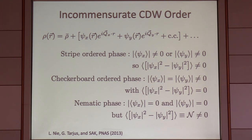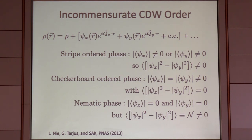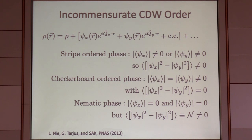I could imagine a nematic phase — translationally invariant, meaning both psi-x and psi-y have zero expectation value, but |psi_x|^2 minus |psi_y|^2 is non-zero. It means that fluctuations of the charge density wave order in the x direction are stronger than in the y direction. This is an example of what's called a composite order parameter — the primary fields have zero expectation value, but some non-trivial composite order parameter develops an expectation value.